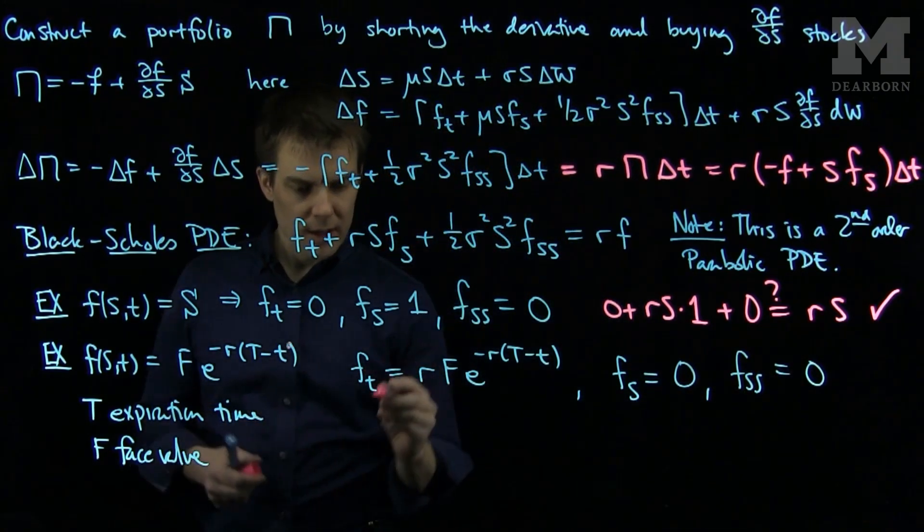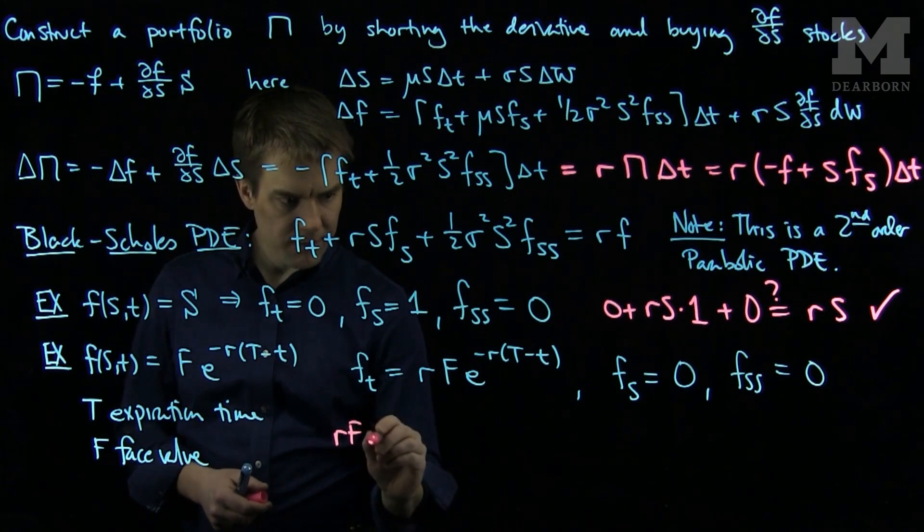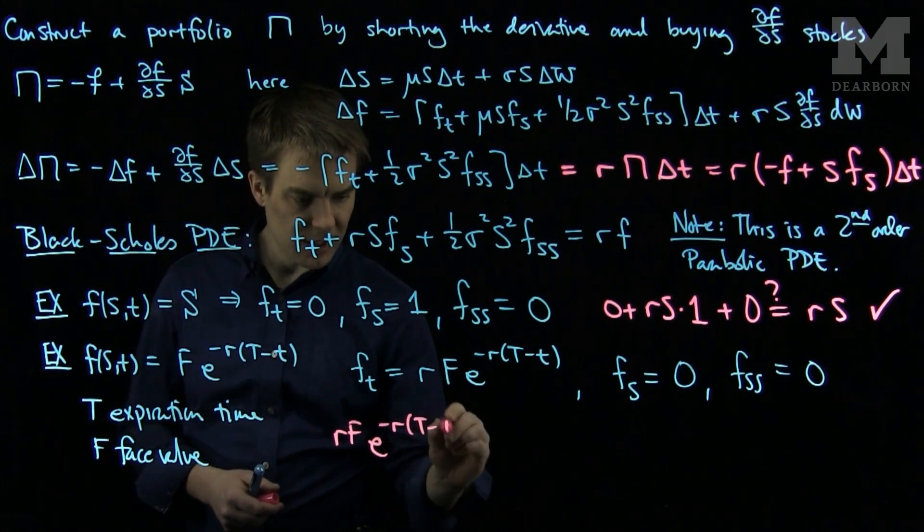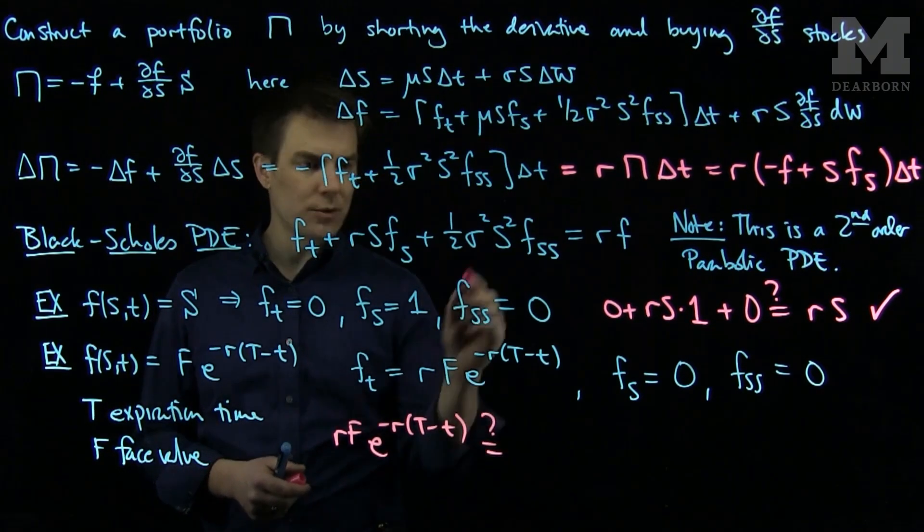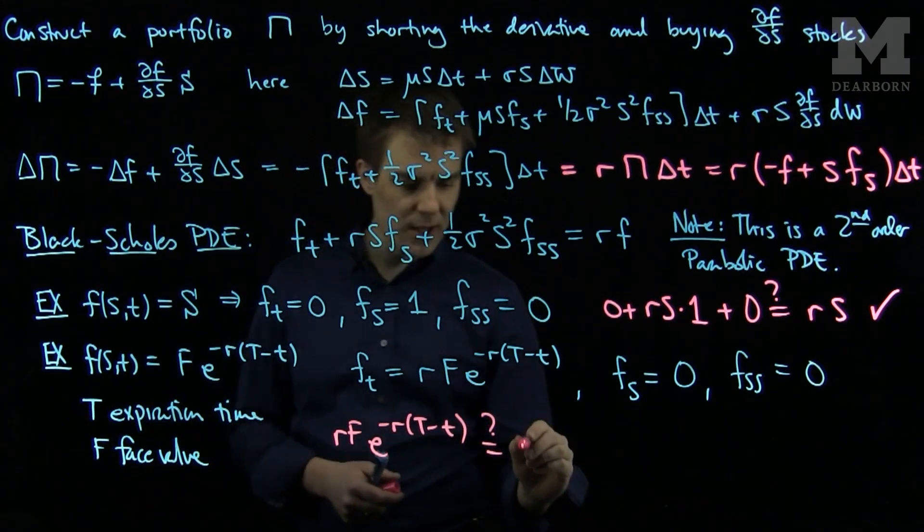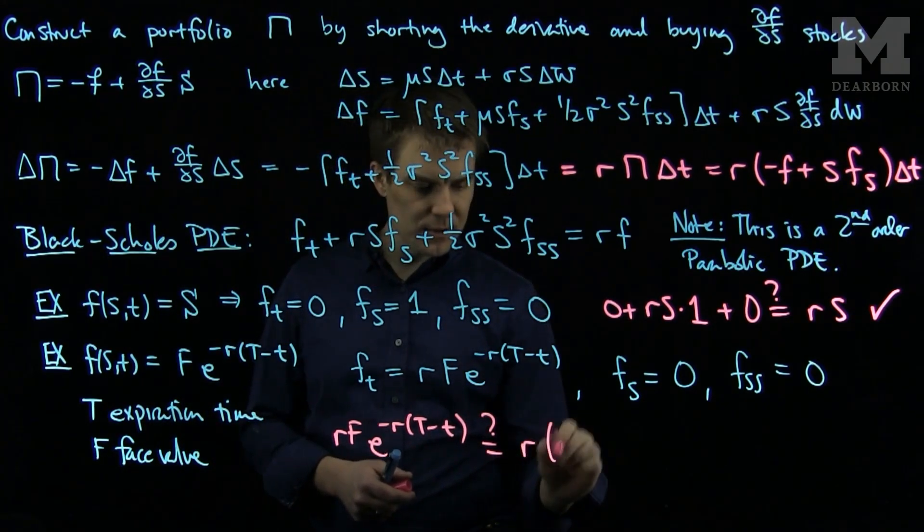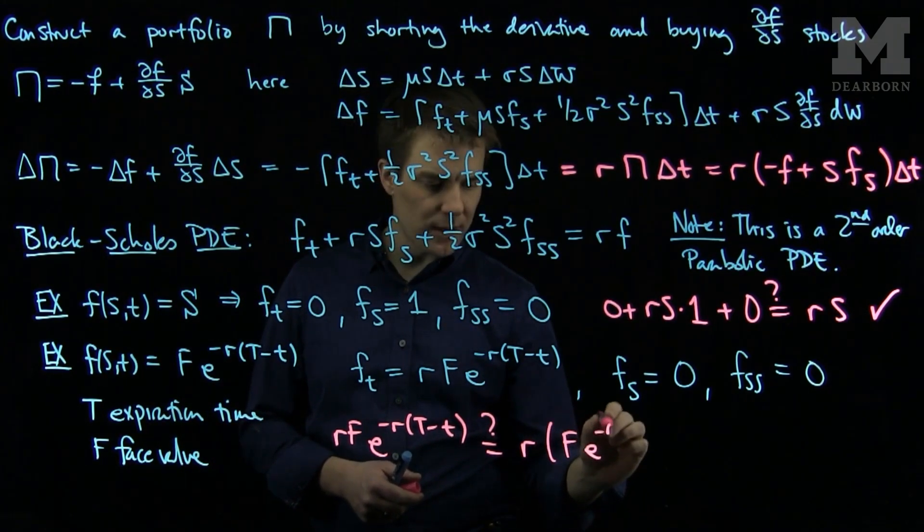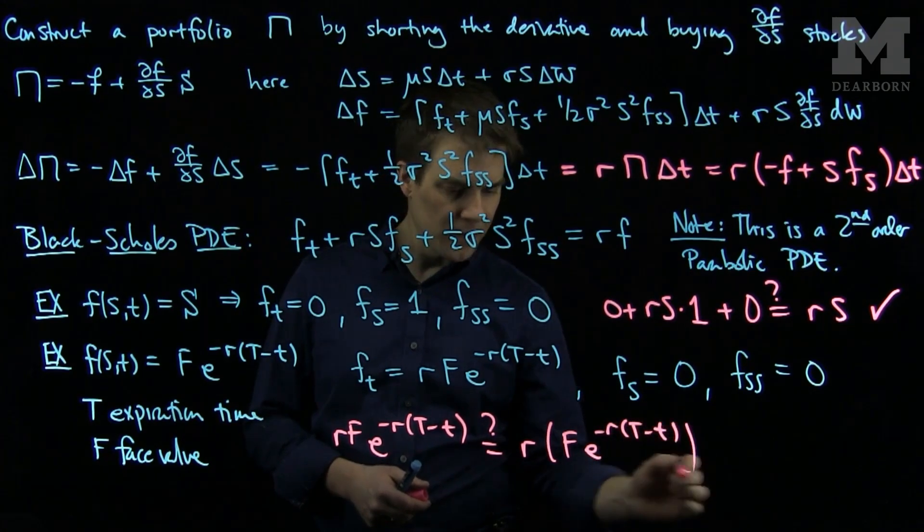by checking the equation, that rFe^(-r(T-t)) plus zero plus zero is that equal to r times Fe^(-r(T-t)). And we see that is, in fact, satisfied.